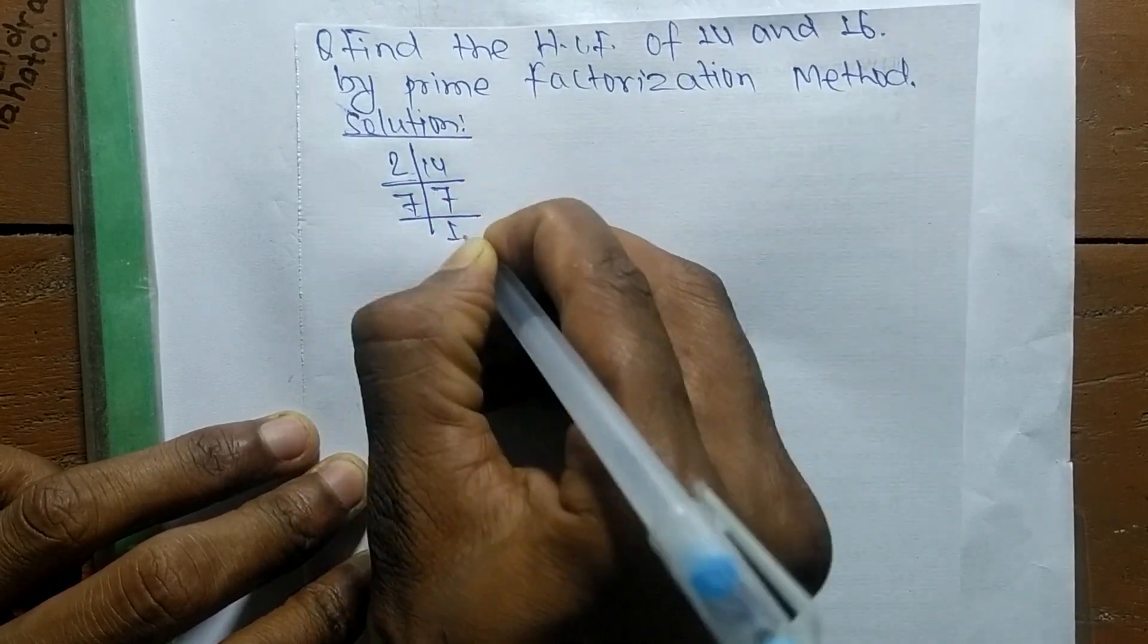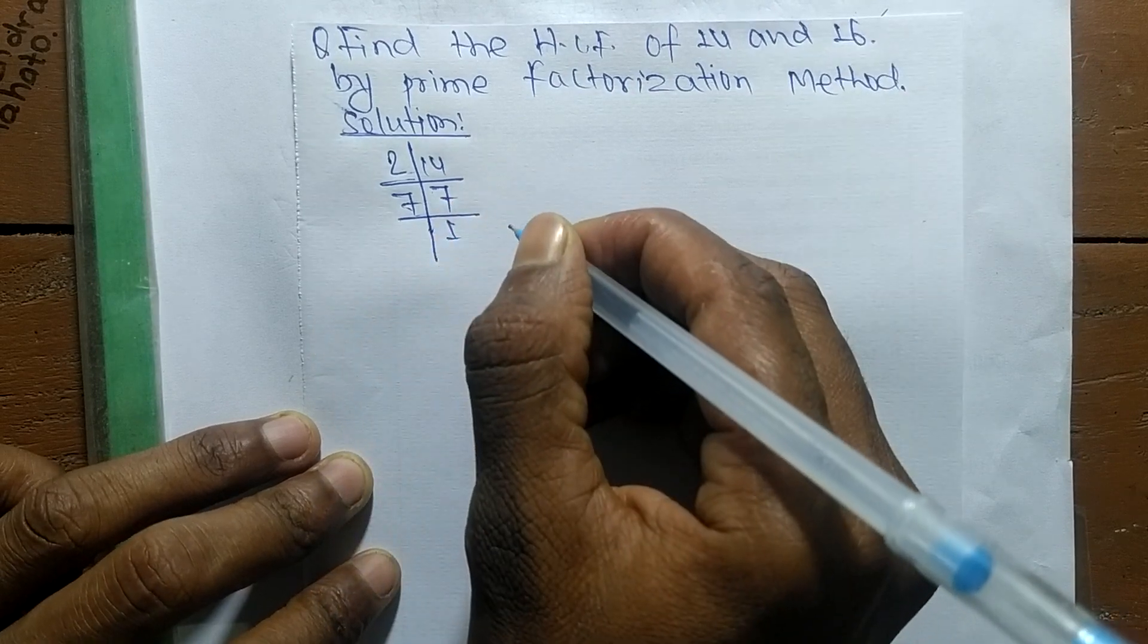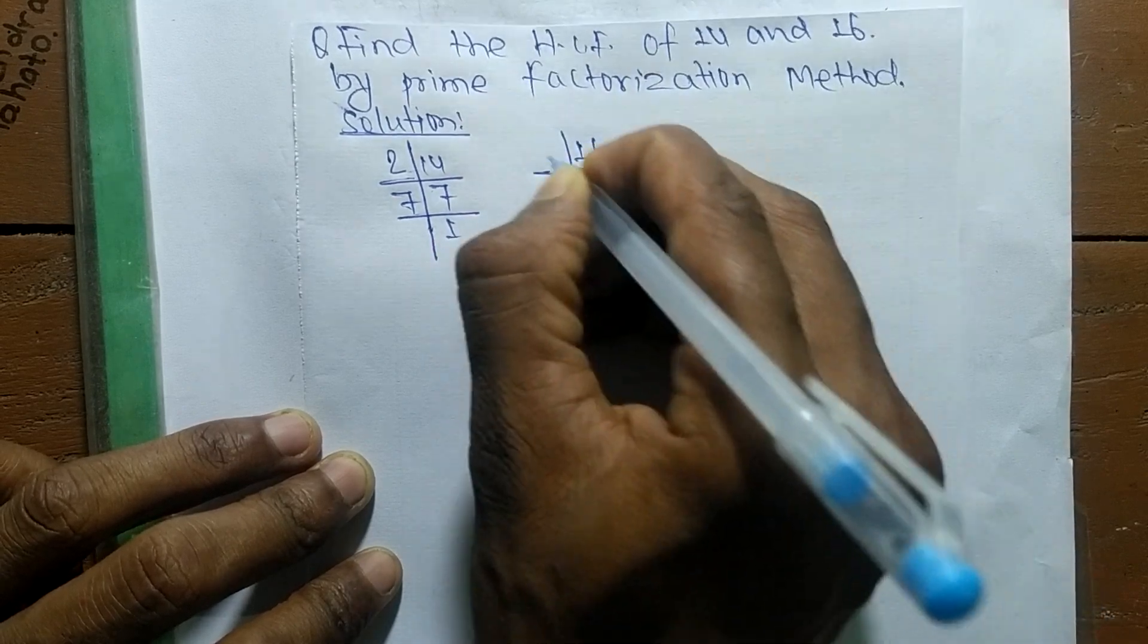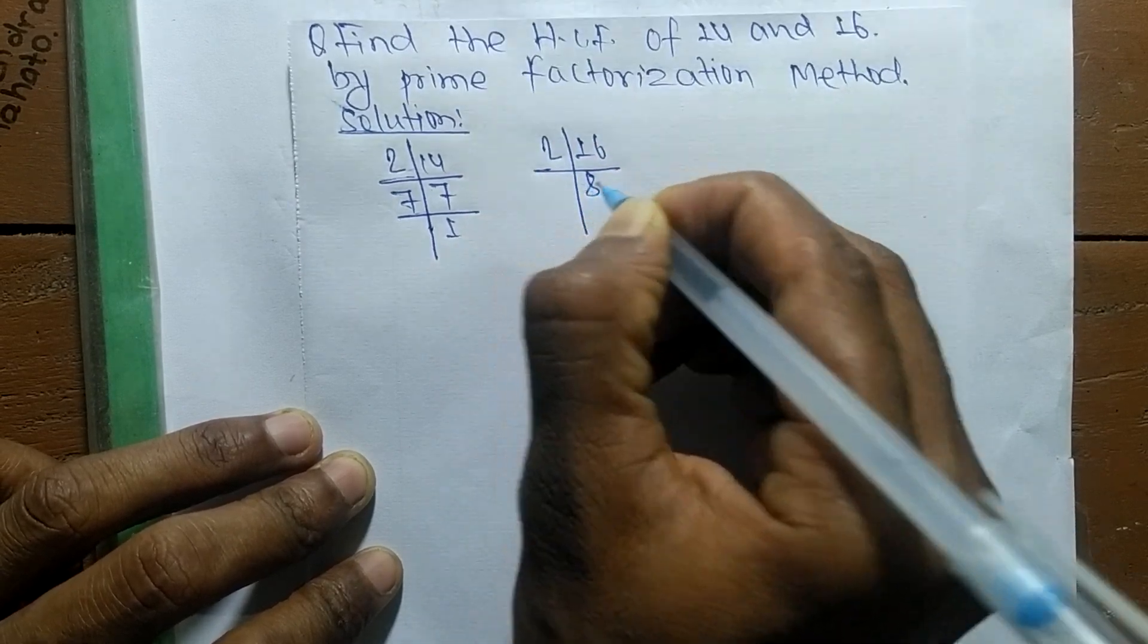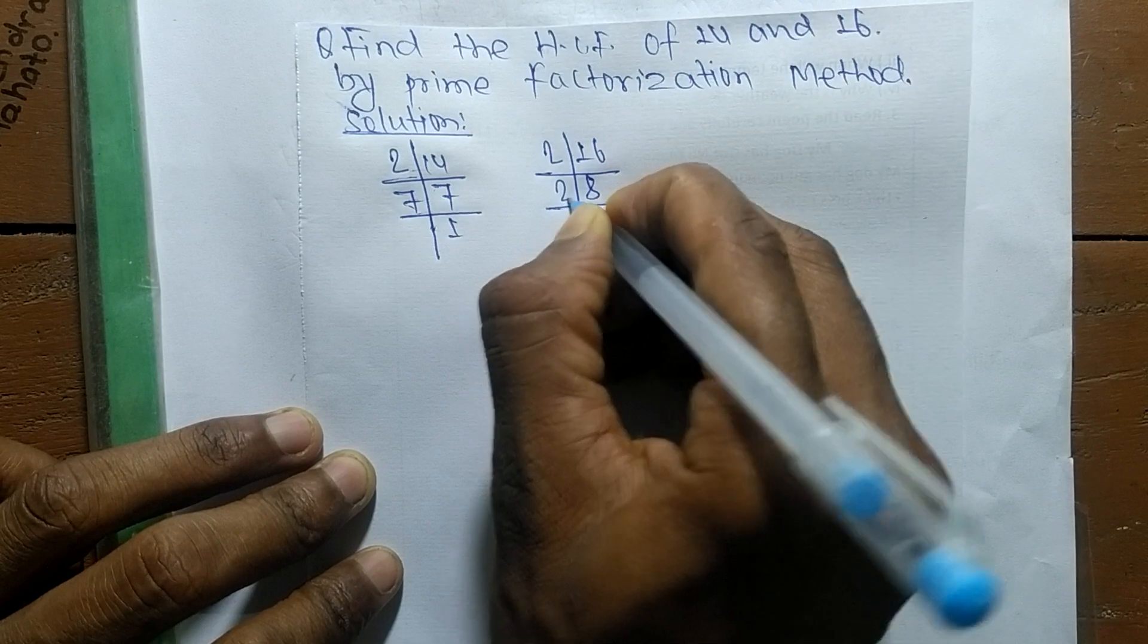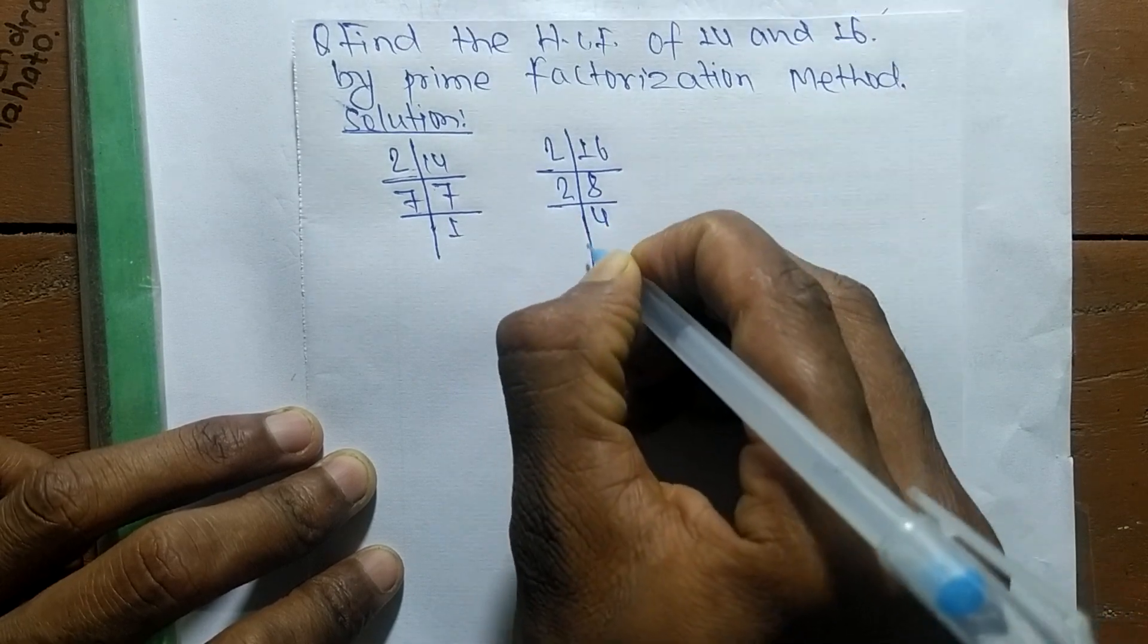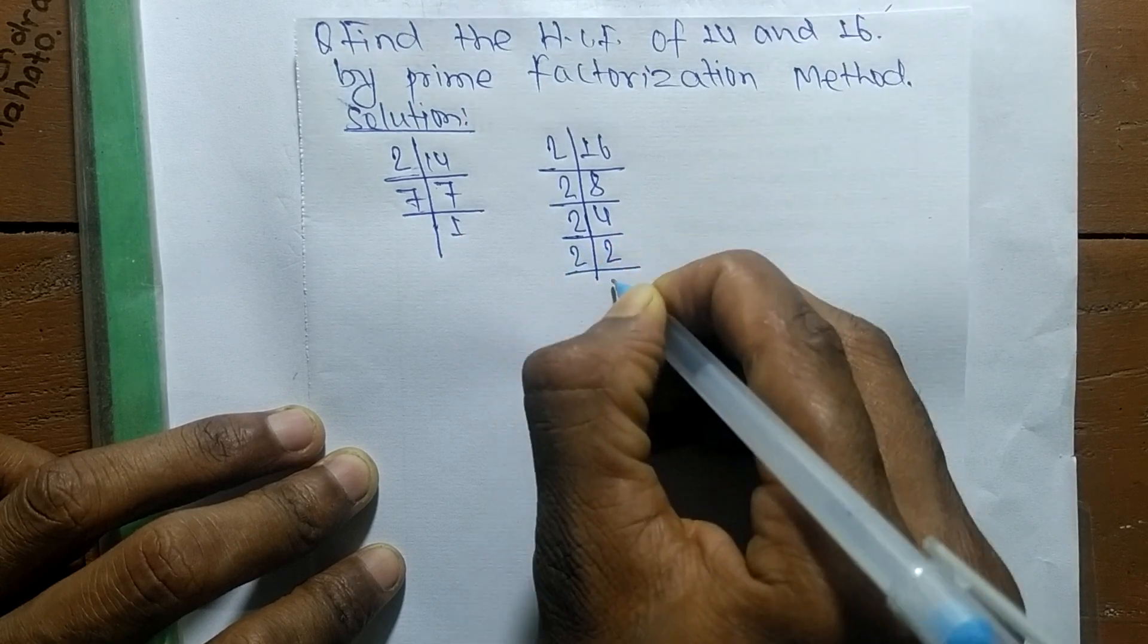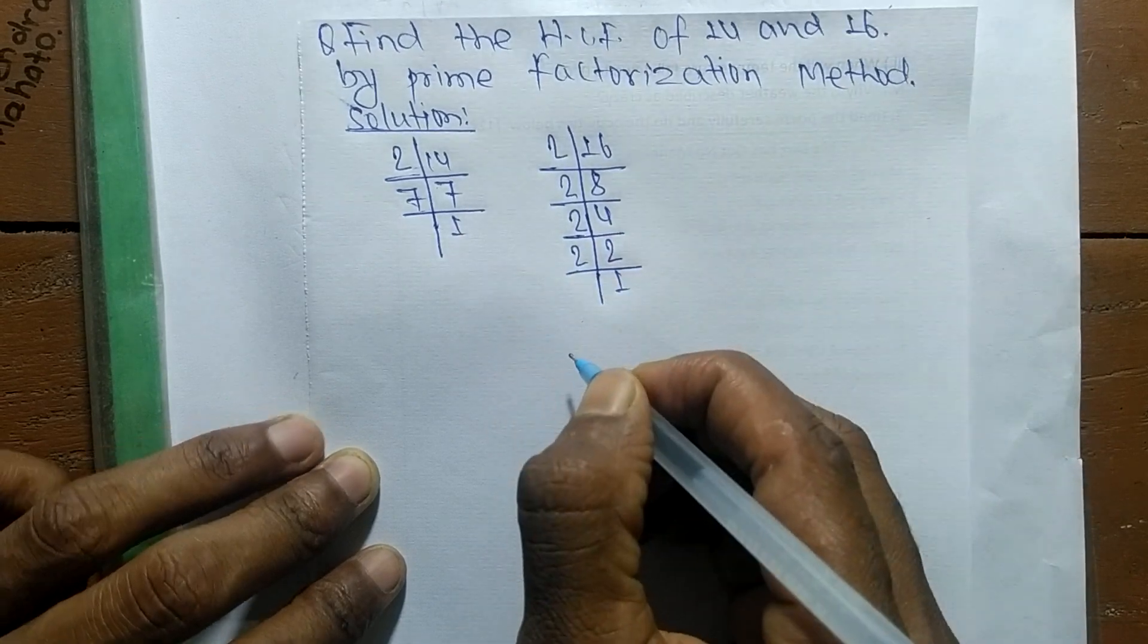In the same way, the prime factors of 16 are: 2 times 8 equals 16, 2 times 4 equals 8, 2 times 2 equals 4, and 2 times 1 equals 2.